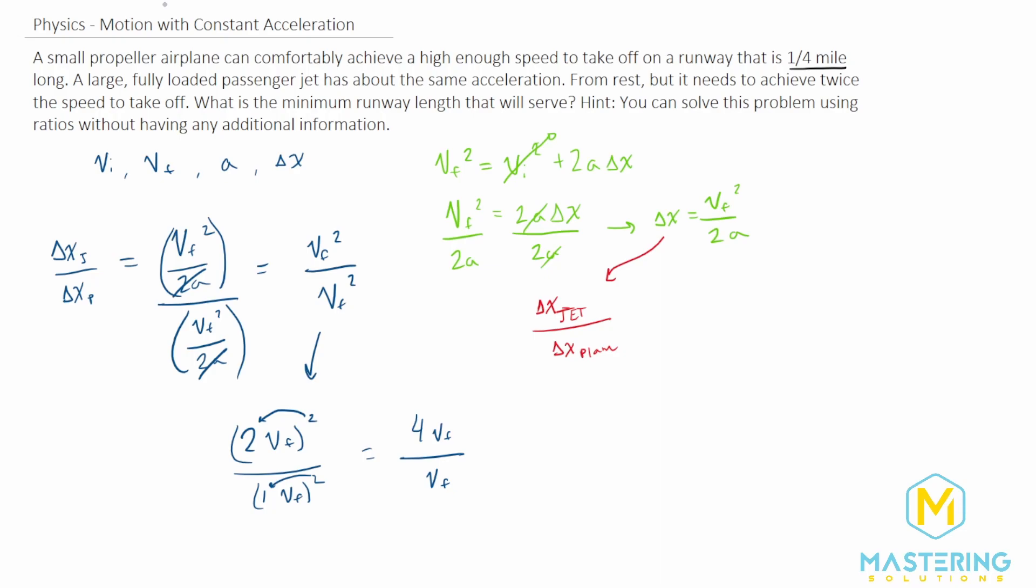So the ratio of the two delta x's will be 4 to 1, meaning that we need 4 times the distance of the runway that we needed for the plane for the jet, which of course, 4 times a quarter is equal to 1 mile. So we just solved for the minimum runway distance that we need for the jet using only ratios, which we found, of course, is a mile.